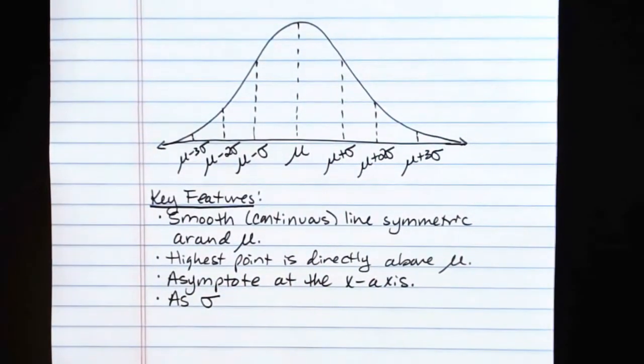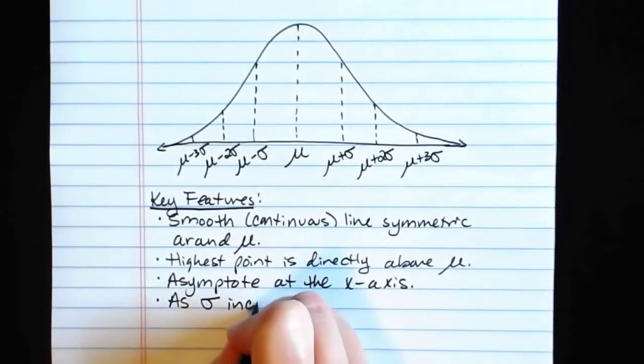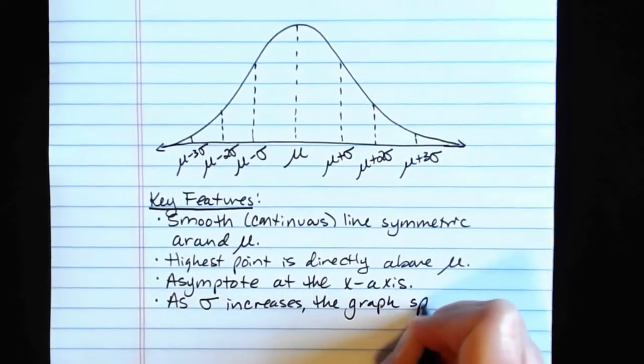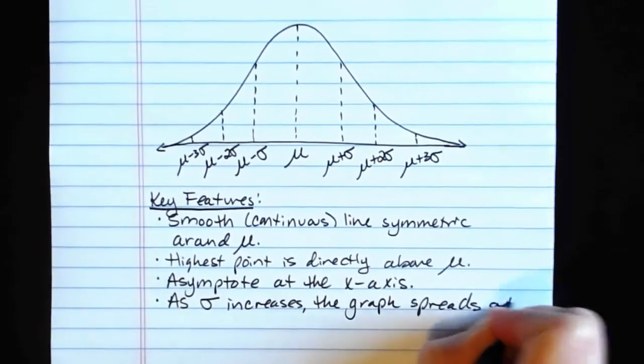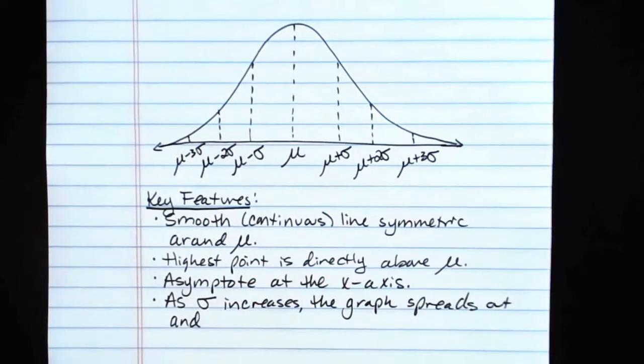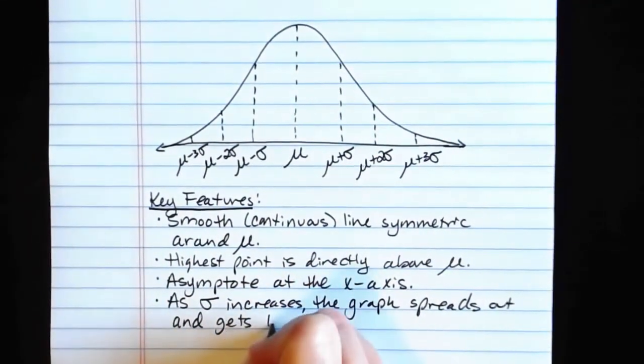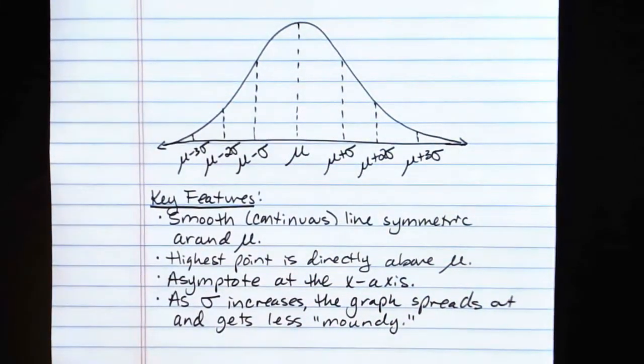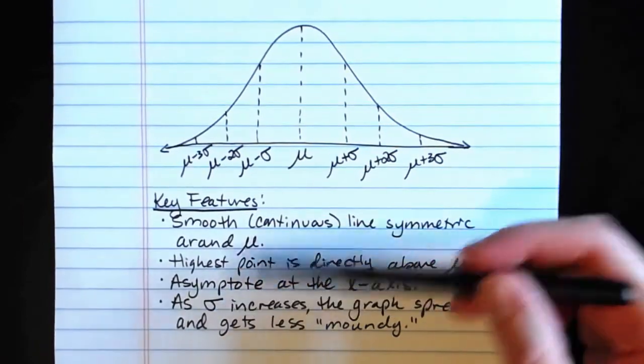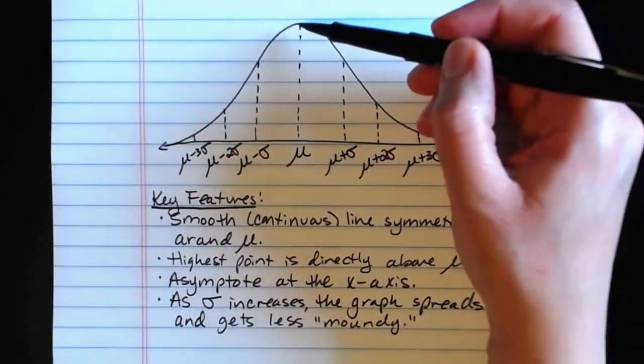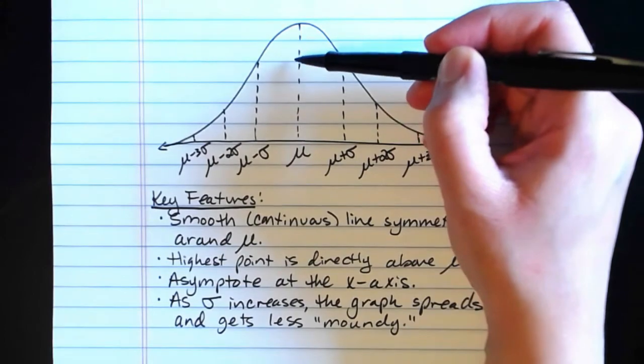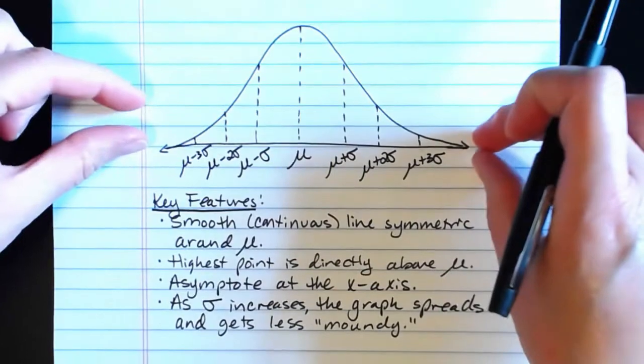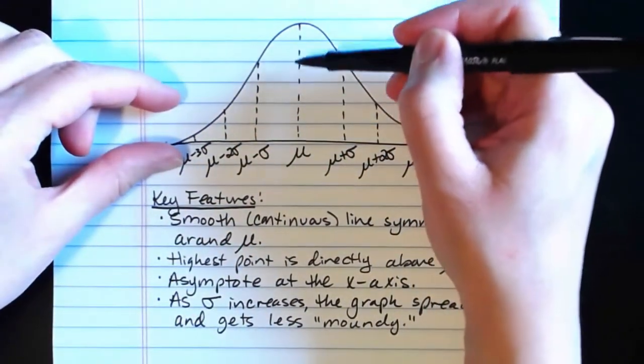Other key features. As sigma, or the standard deviation, increases, the graph spreads out and gets less moundy. Moundy there, not actually a technical term. But the idea is if we were to increase the sigma value, what you would see happen is this peak would start to squash down. It would get less tall, and more of that area that's up here would go out into the tails. So the tails would get thicker, and the peak would come down.